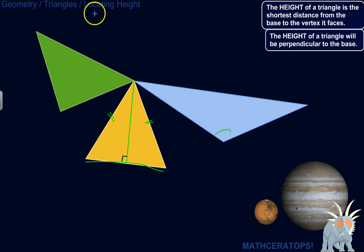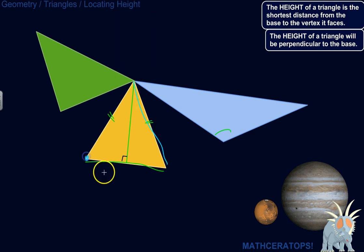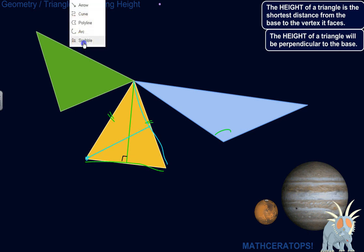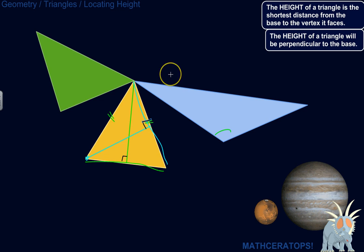Now I'll show you the other way. We could call this side the base instead. The vertex opposite it is this one, so the height would be a perpendicular line segment that goes like this — it forms a right angle here. Does that make sense? Hopefully.